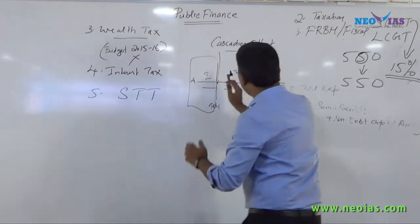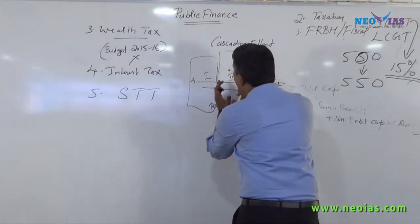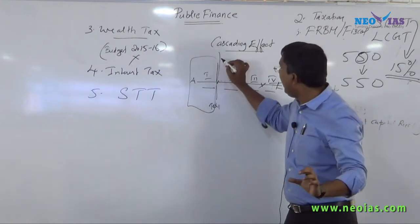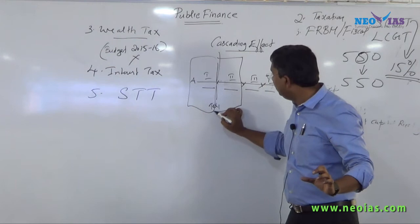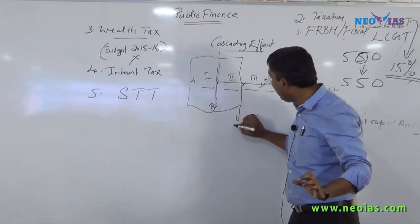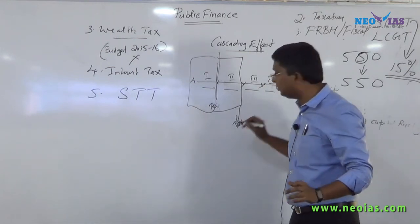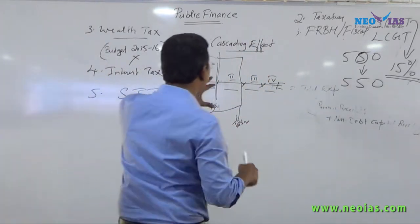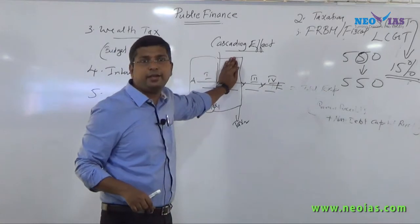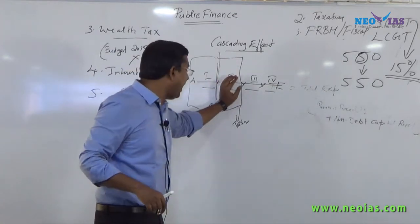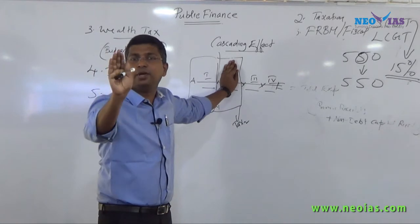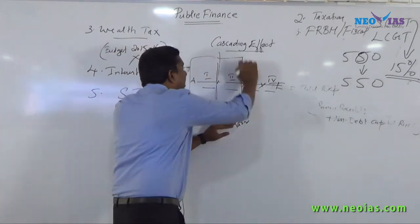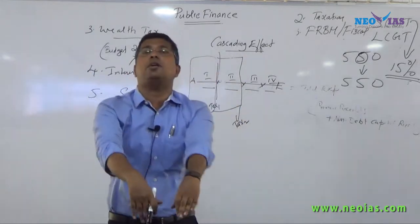When it reaches stage 2, some items have been value-added in this stage. At this stage, the government will again impose a tax. Now keep this in mind — in the second stage, only the value-added item is added. But instead of taxing only the value-added component, what actually happens is the government is imposing tax on the entire value.